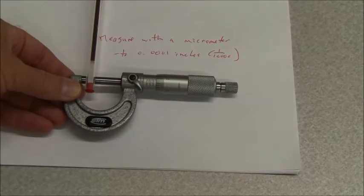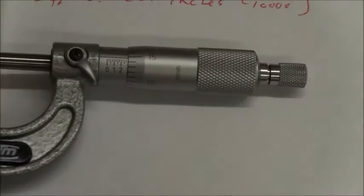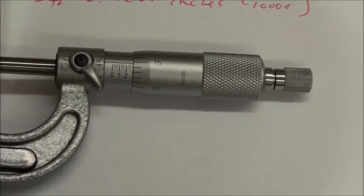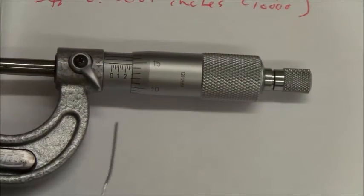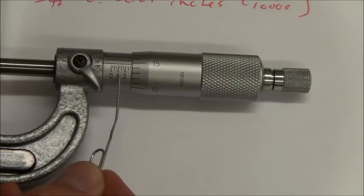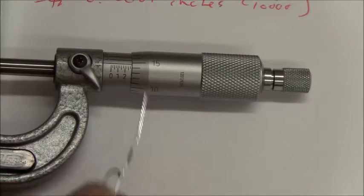I'm going to zoom so you can see it better. So here's the reading that we have right now. The one is one-tenth of an inch. The two is two-tenths. That's point two.